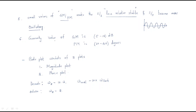Generally, the value of gain margin should be 5 to 10 decibels for any system — gain margin is measured in decibels. Phase margin, which is always measured in degrees, should be 30 to 40 degrees. These are important standard values: gain margin 5 to 10 dB, phase margin 30 to 40 degrees.